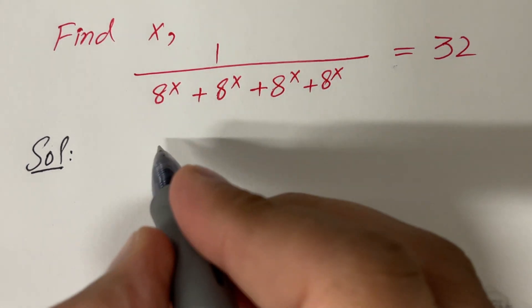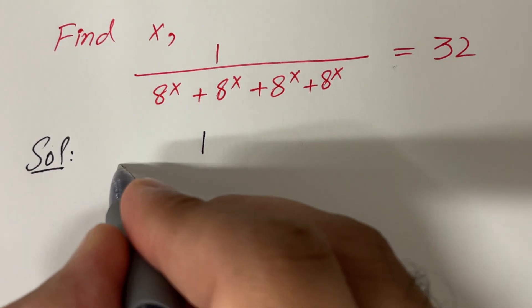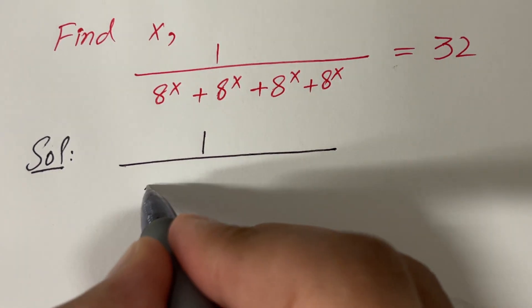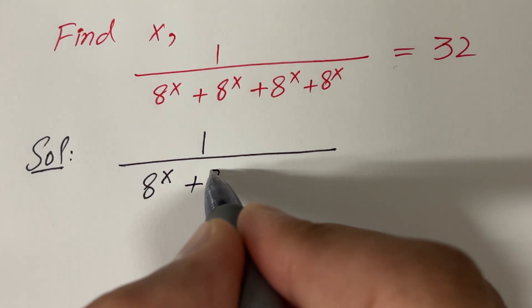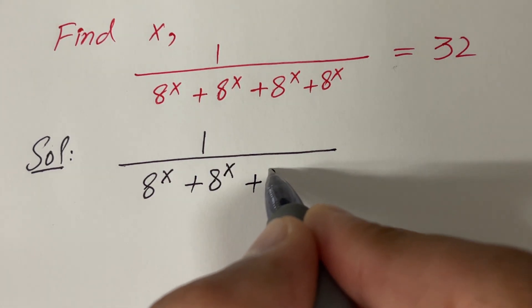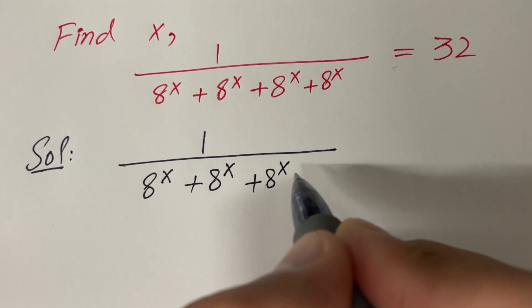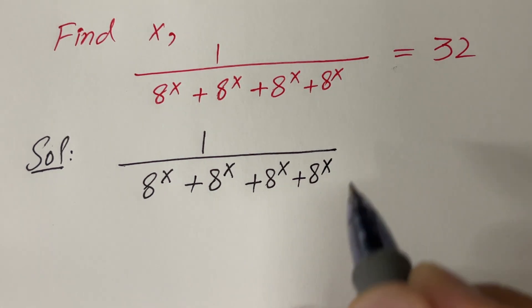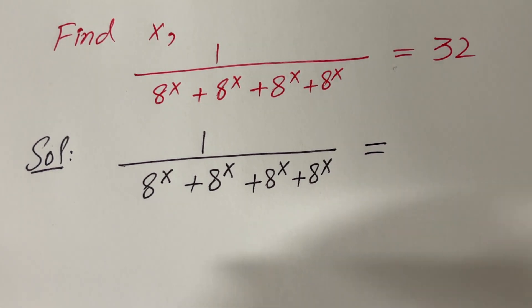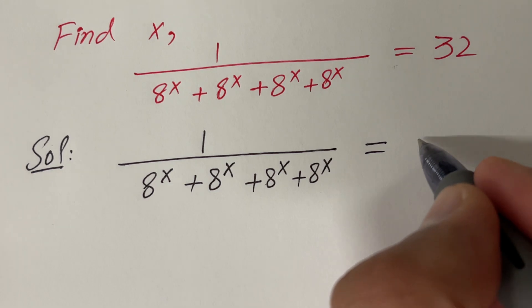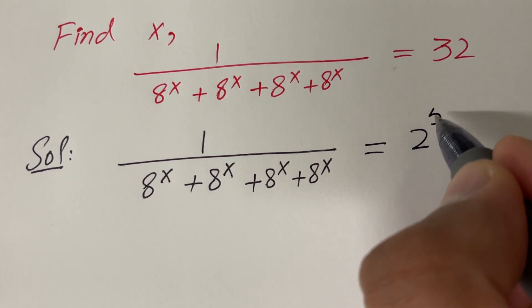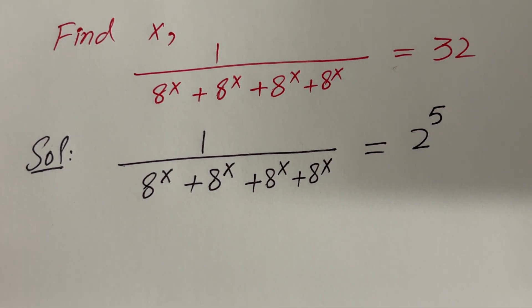First of all, the left hand side of the given equation is 1 over 8 raised to the power x, plus 8 raised to the power x, plus 8 raised to the power x, plus 8 raised to the power x. The right hand side is 32, but 32 can be written as 2 raised to the power 5.